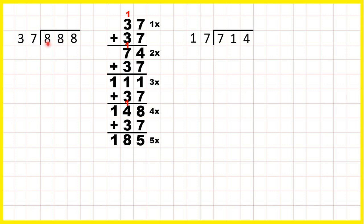Taking the first two digits together, we have 88 divided by 37. We can see that the closest multiple of 37 to 88 which is still less than 88 is 2 times — that's 74. And because 74 is 2 times 37, we need a 2 in our answer line.